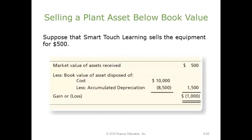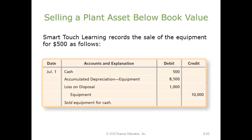Now suppose we only receive $500 in cash on the asset. The book value of that asset is $1,500. In this case, we're going to have a loss of $1,000 on that transaction. The entry looks like this: debit cash $500, debit accumulated depreciation on equipment $8,500, debit loss on disposal $1,000, and credit the equipment balance of $10,000.